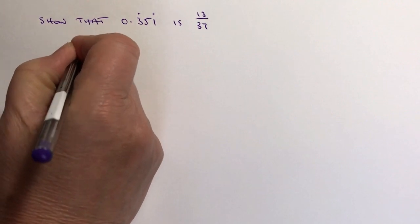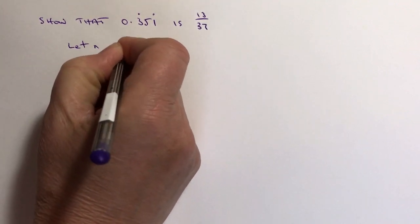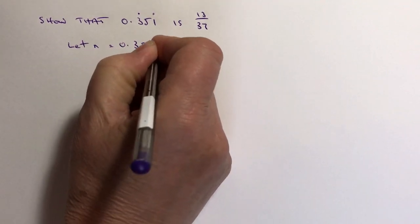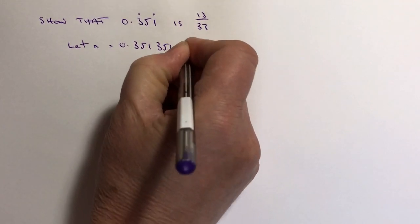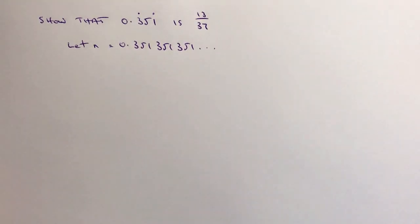What we normally do is we'll say let n equal 0.351 351 351 and so on. The method is that we look at that and we try to find a way of multiplying this value of n to get rid of all of the recurring numbers as far as we possibly can.